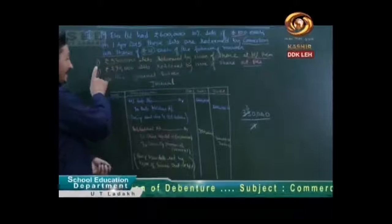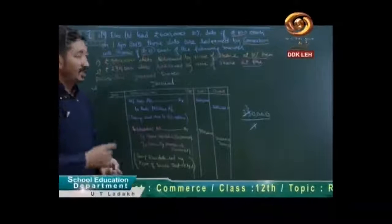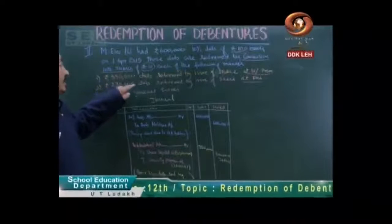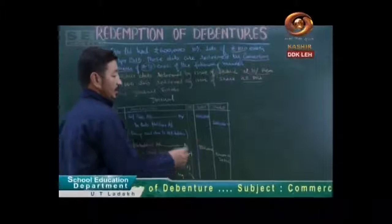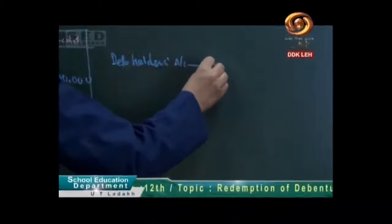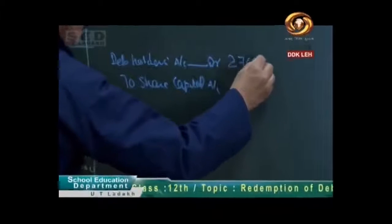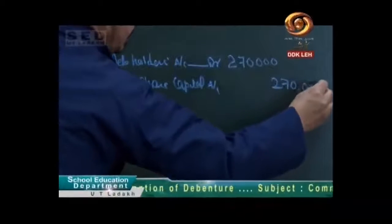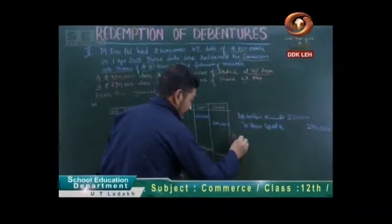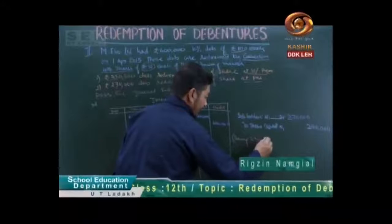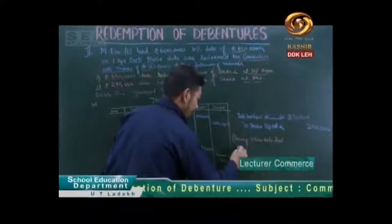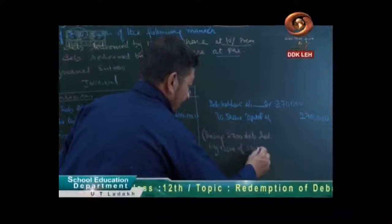Now next case — second case. Two lakh 70,000 debentures are redeemed. By issue of shares — by issue of 27,000 shares at the rate of rupees 10, that is at par.